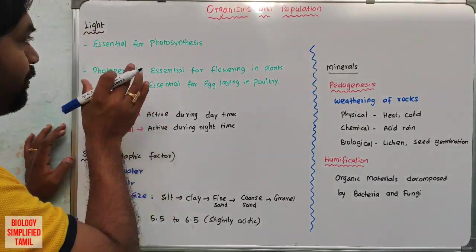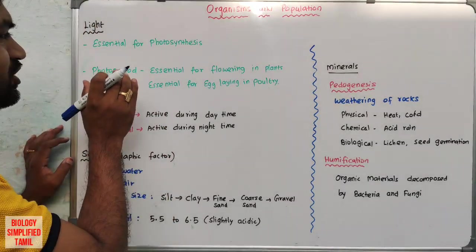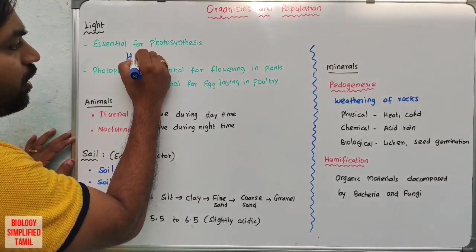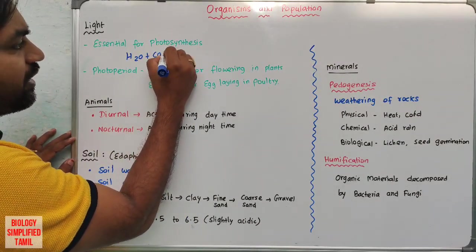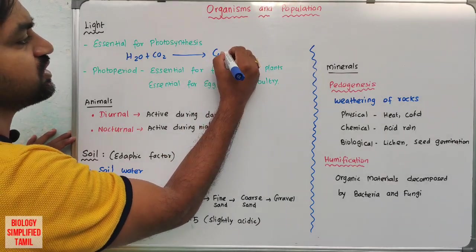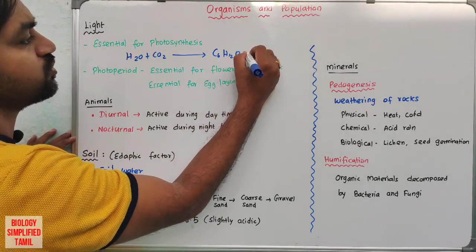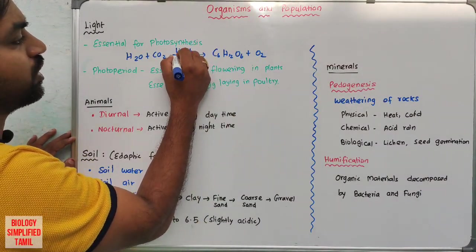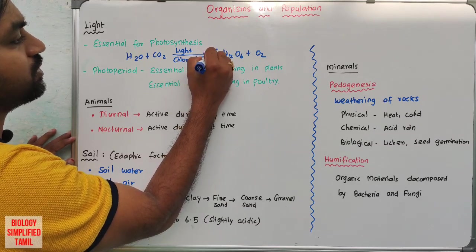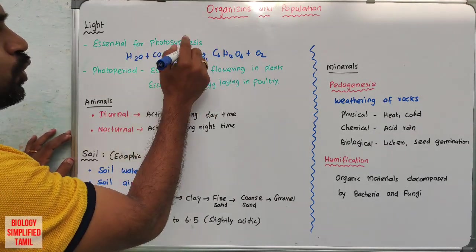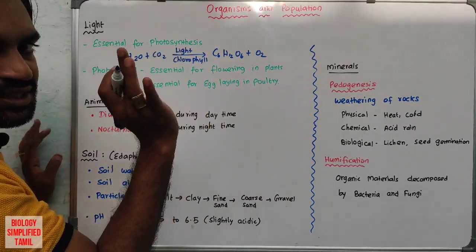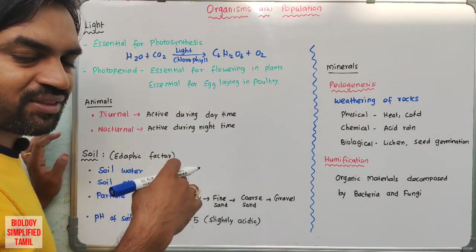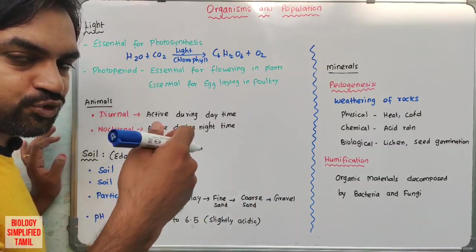Next, abiotic factor is light. Light is essential for photosynthesis. The raw materials water and carbon dioxide give rise to glucose (C6H12O6) plus oxygen, using light energy and chlorophyll pigment. Without light, photosynthesis cannot occur. Light is essential for plants and food synthesis, and in turn herbivores and carnivores depend on this food chain.